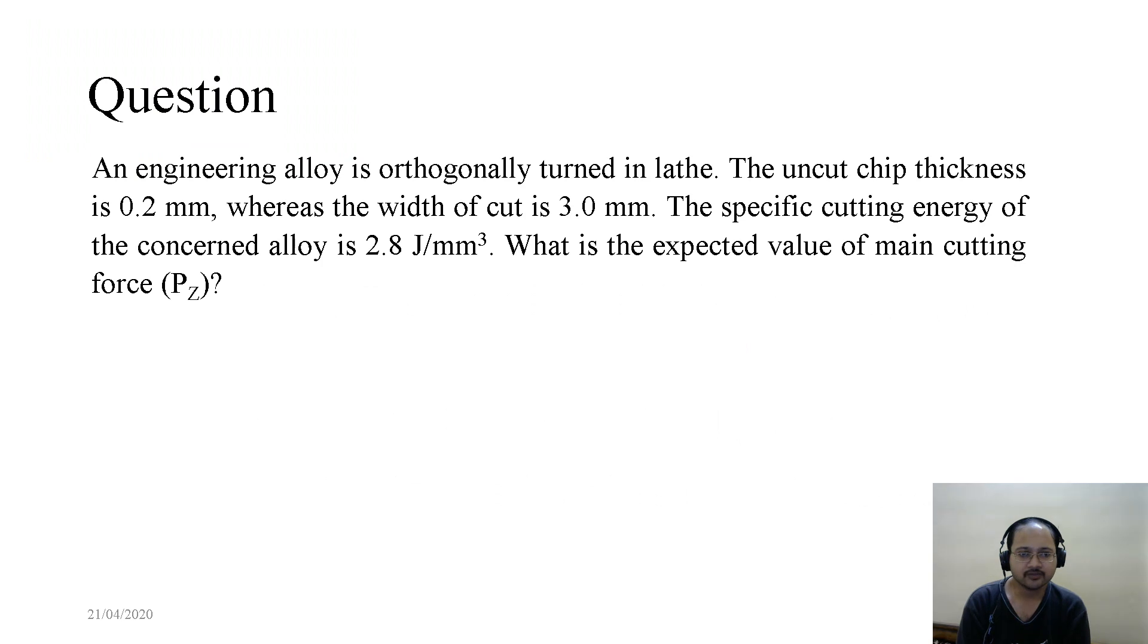Question 1: An engineering alloy is orthogonally turned in a lathe. The uncut chip thickness is 0.2 mm, whereas the width of cut is 3 mm. The specific cutting energy of the concerned alloy is 2.8 joules per mm³. What is the expected value of main cutting force Pz?